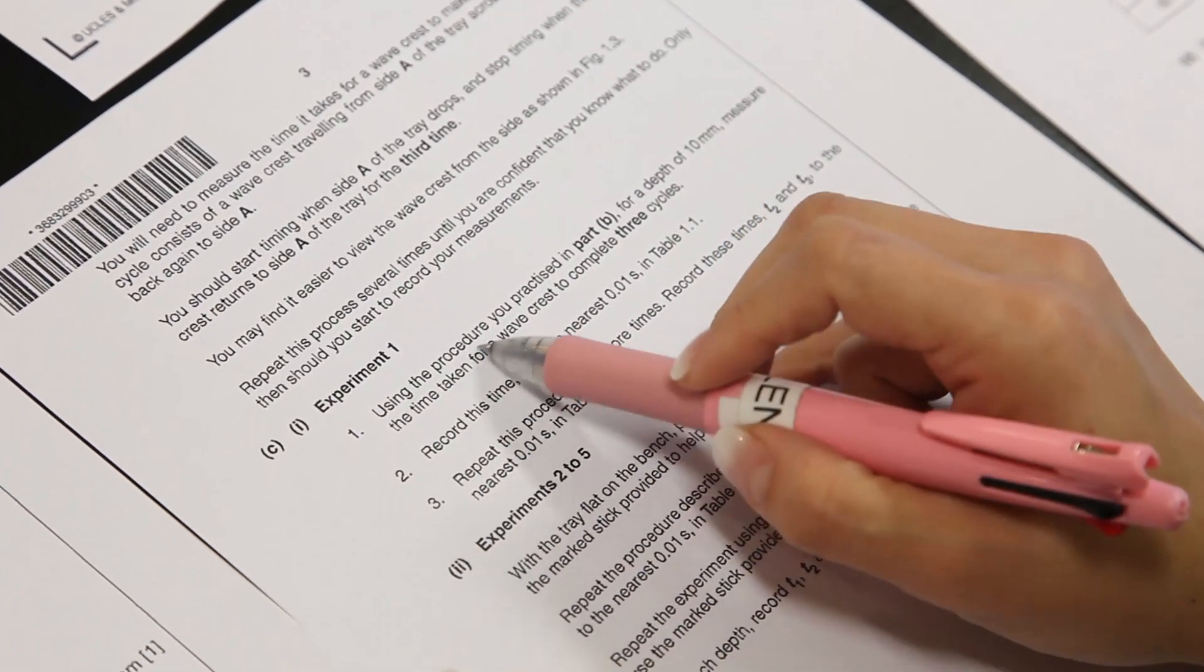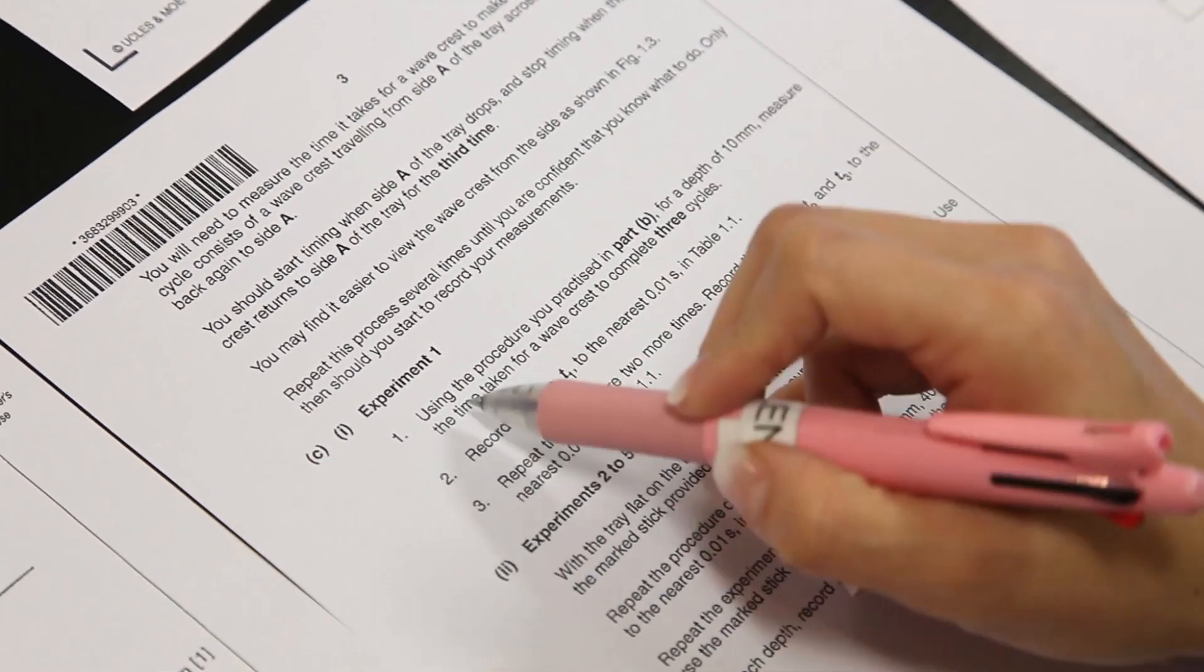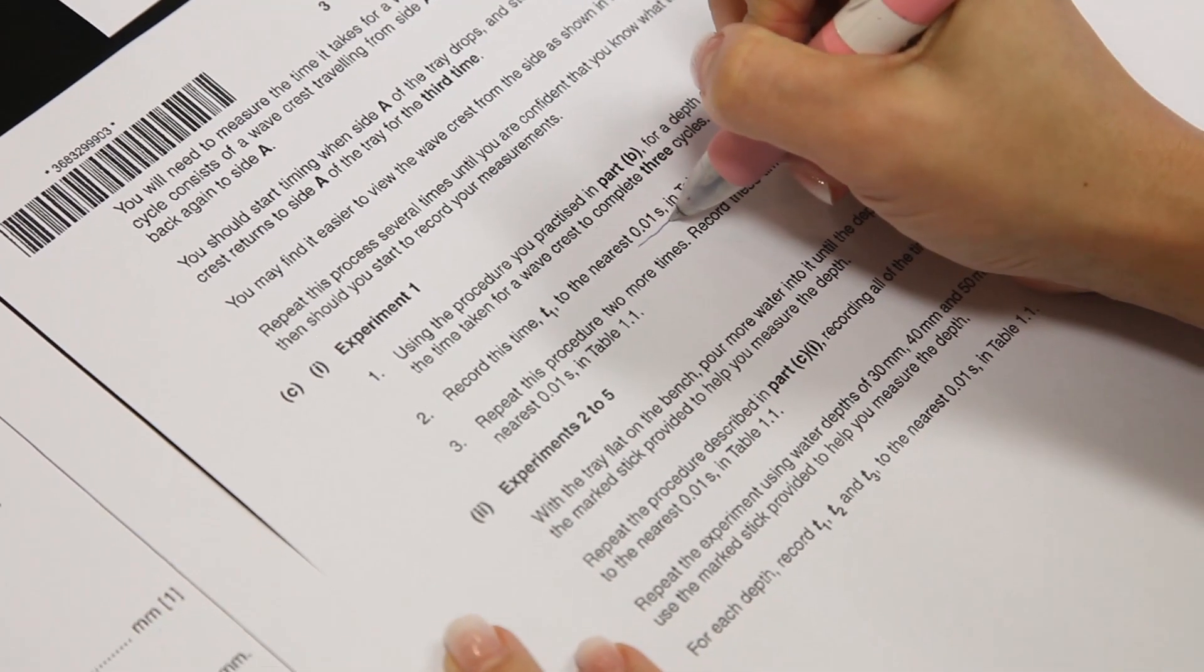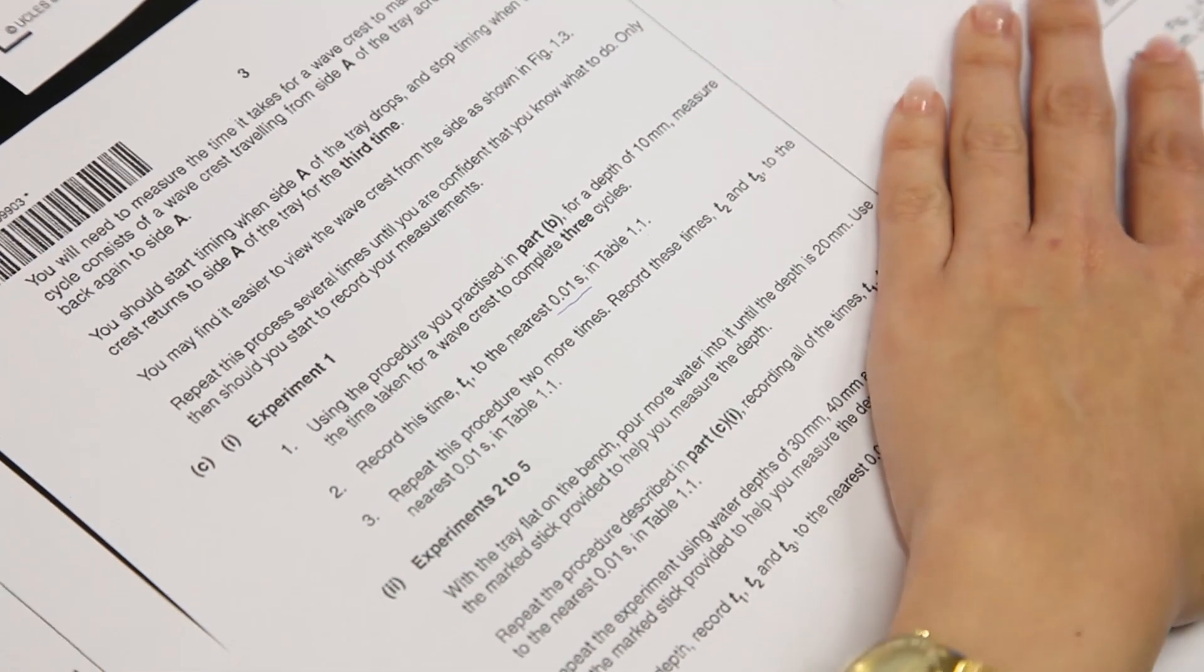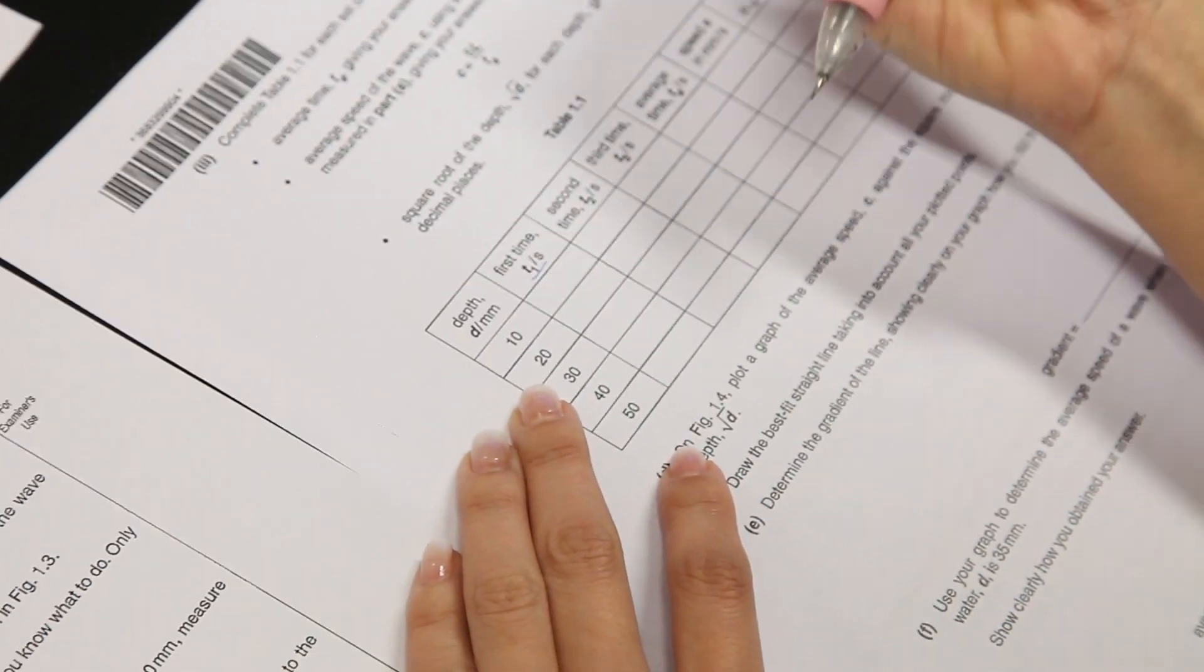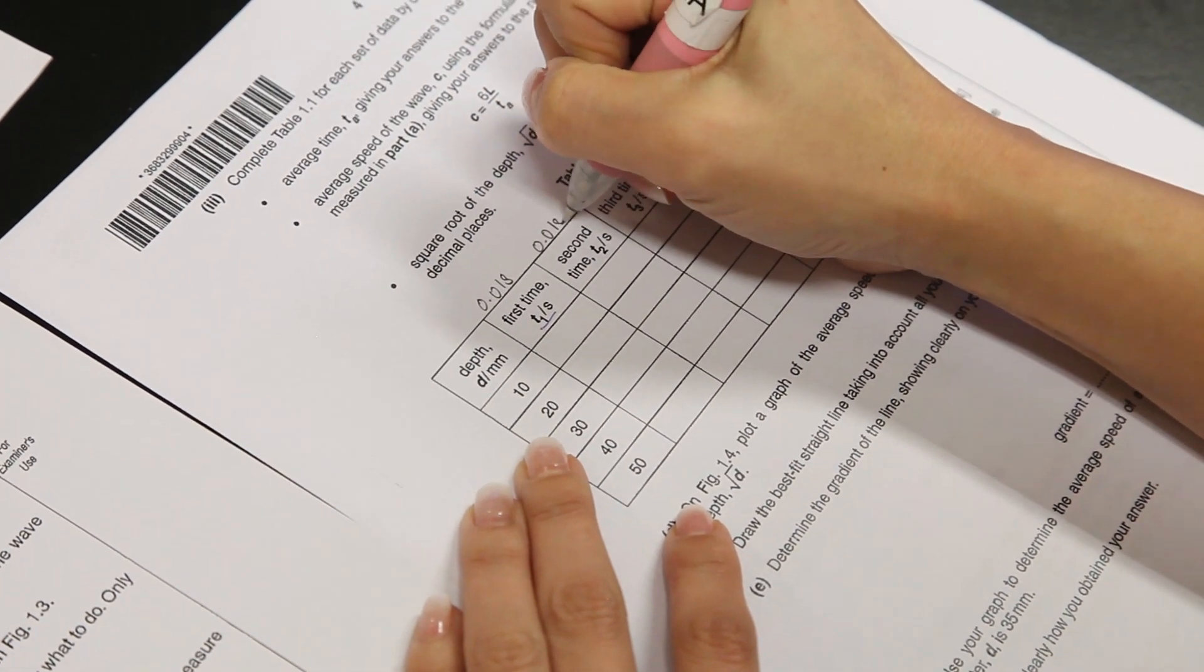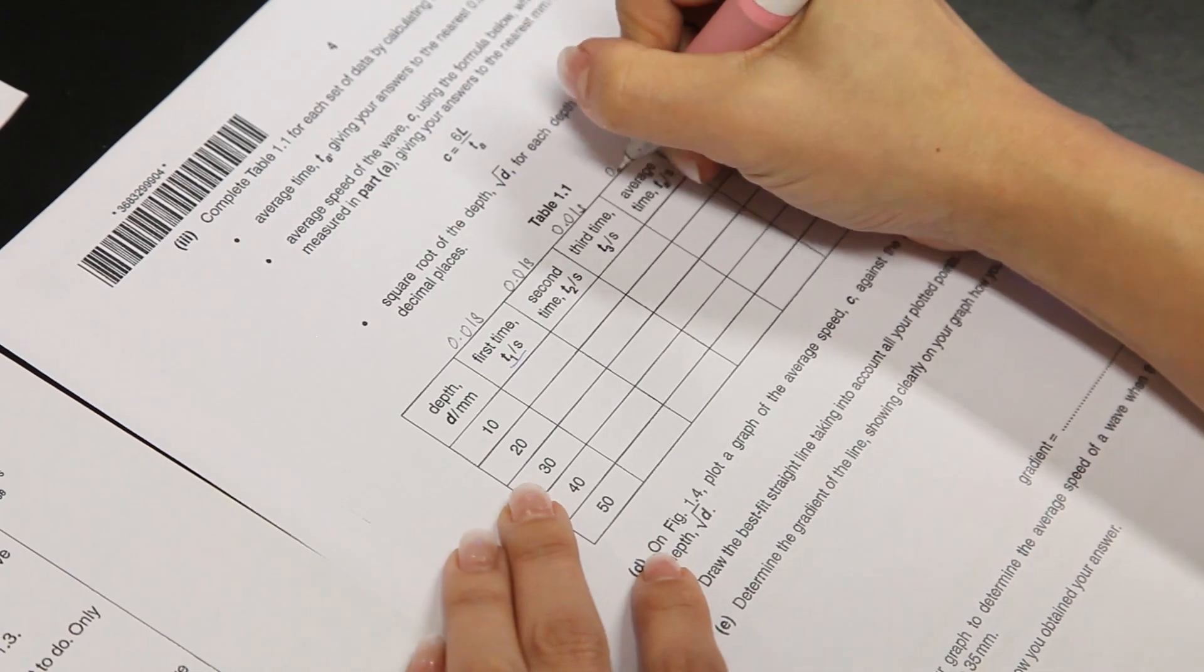Experiment 1 shows, here says that using the procedure you practice in part B for the depth of 10 mm, measure the time taken for a wave crest to complete 3 cycles. Record this time T1 to the nearest 0.01 second in table 1.1. So let's come to table 1.1. Here, I have to remind myself that reading taken should be close to 0.01 seconds. So all this is 0.01 seconds and average timing should also be 0.01 seconds.